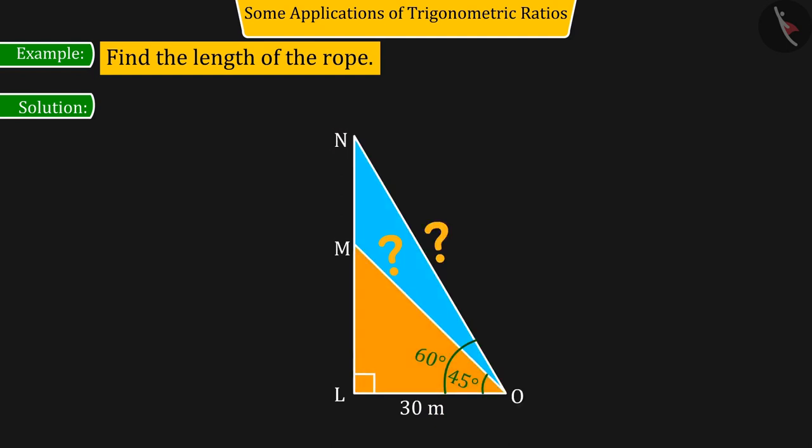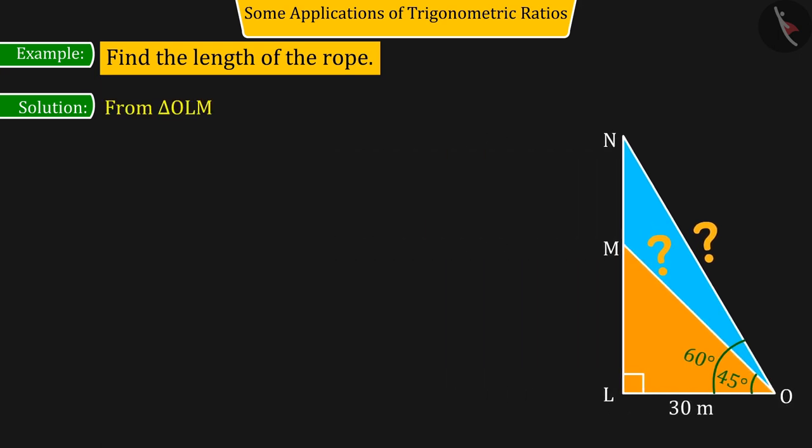First, by taking the right angle triangle O, L, M, he tries to find the length of O, M. Where, using the trigonometric ratio, he gets cos 45 degrees equal to O, L upon O, M.